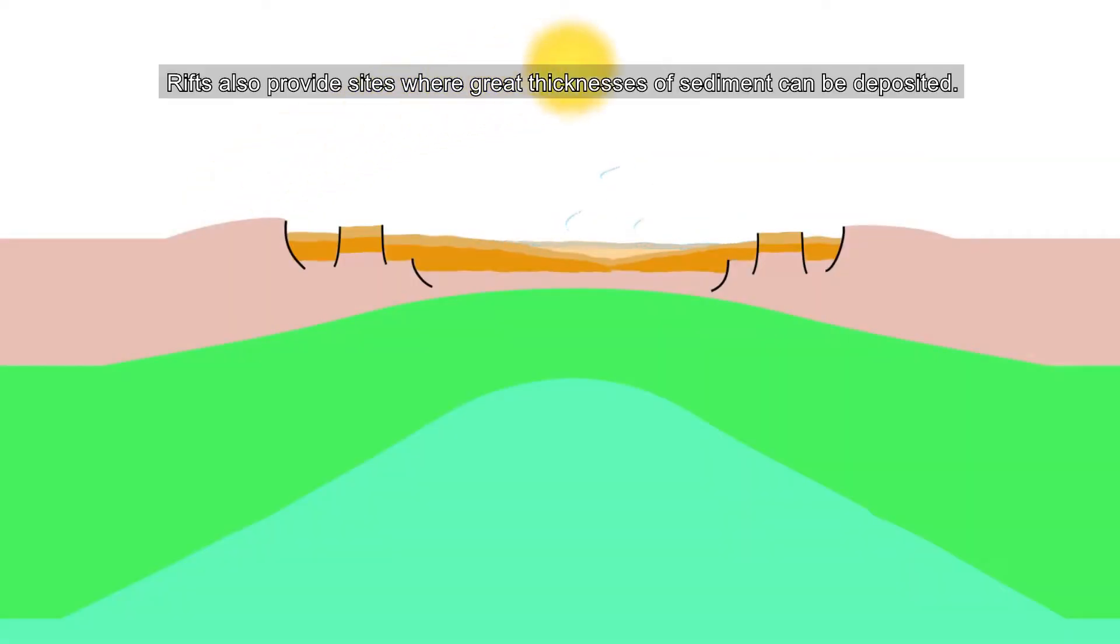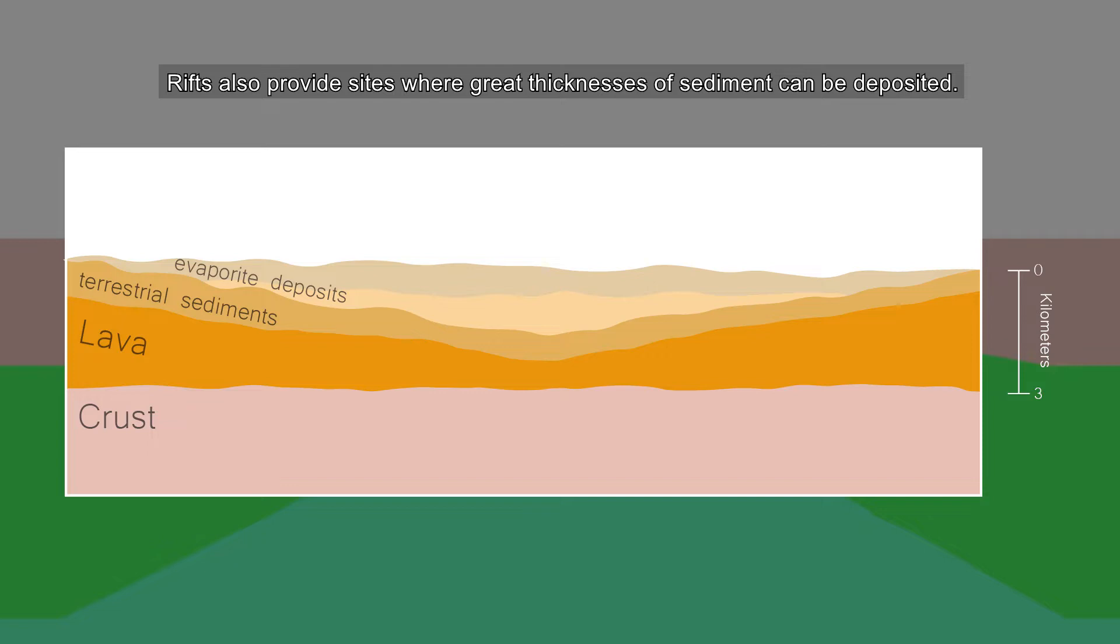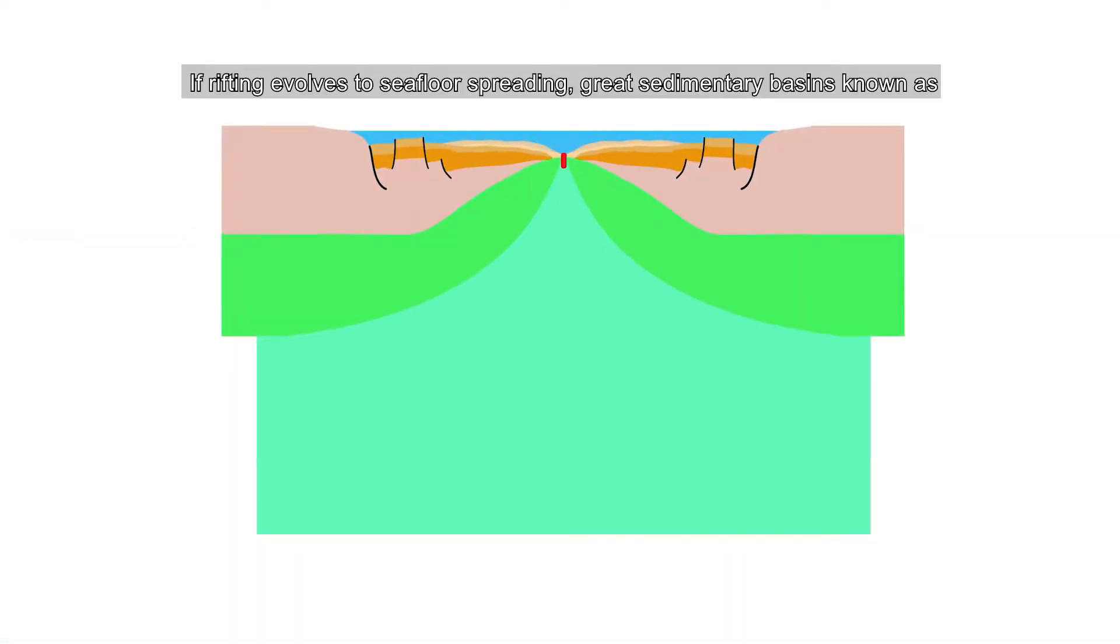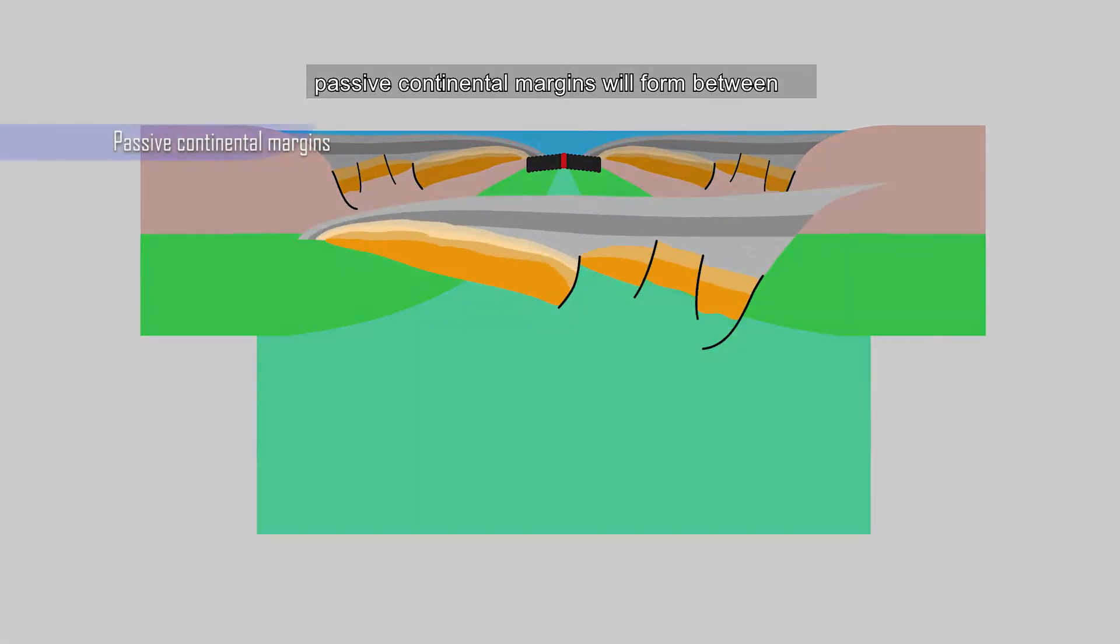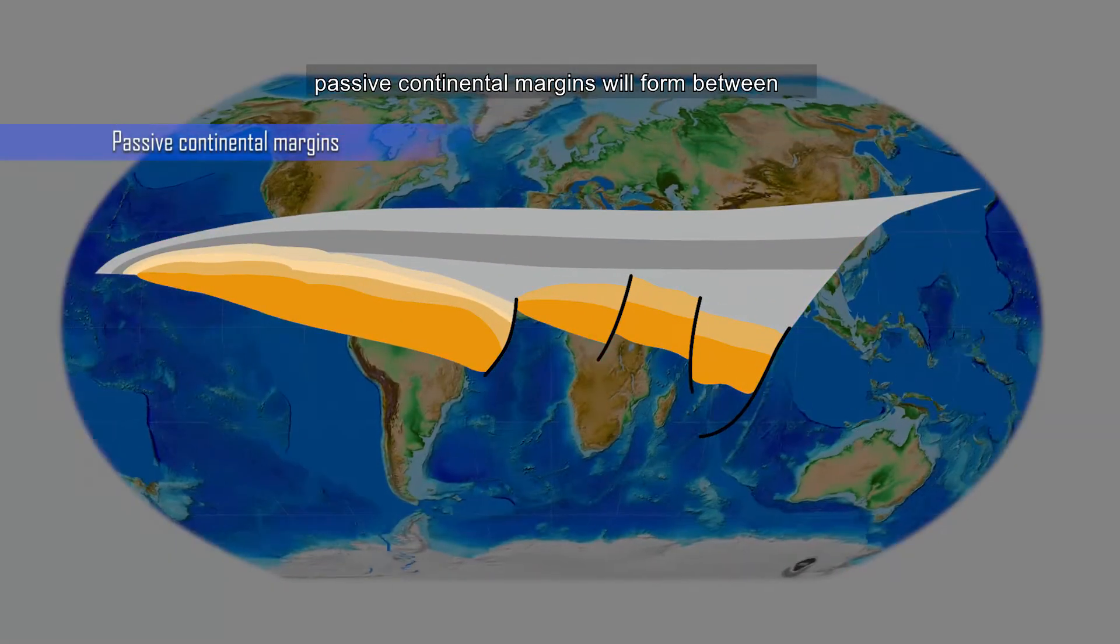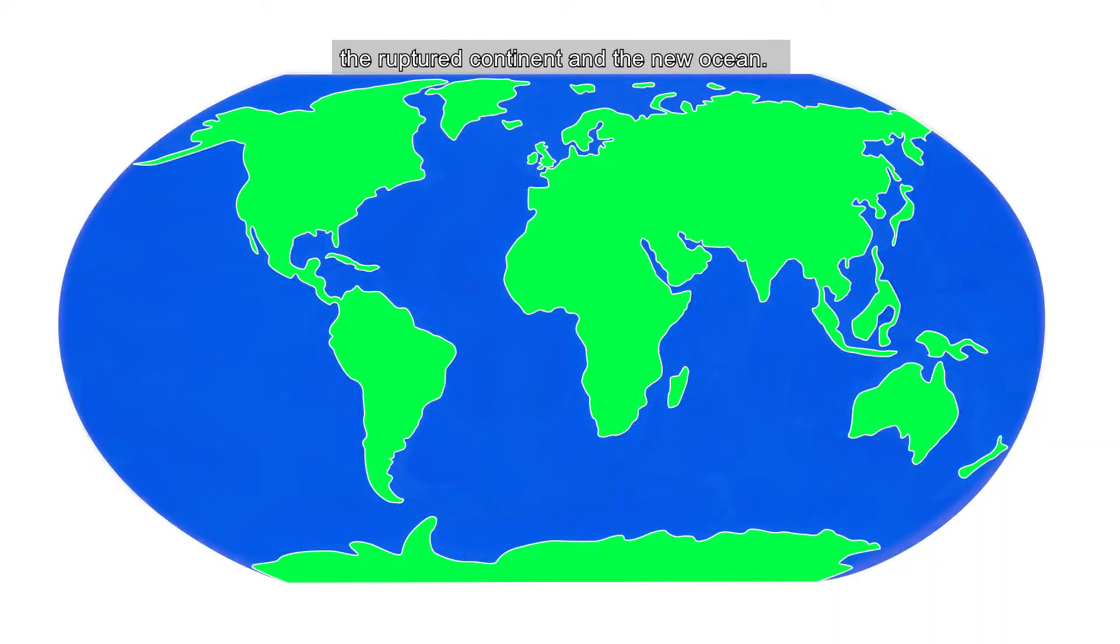Rifts also provide sites where great thicknesses of sediment can be deposited. If rifting evolves to seafloor spreading, great sedimentary basins known as passive continental margins will form between the ruptured continent and the new ocean.